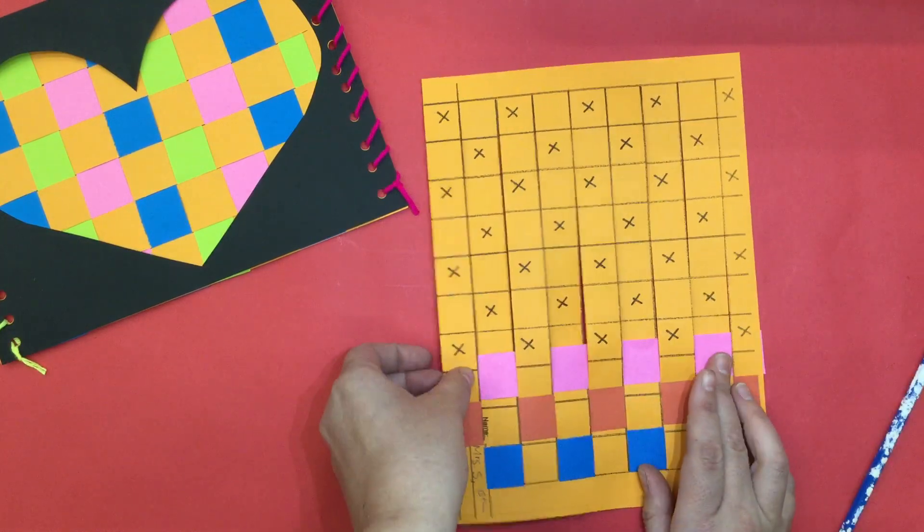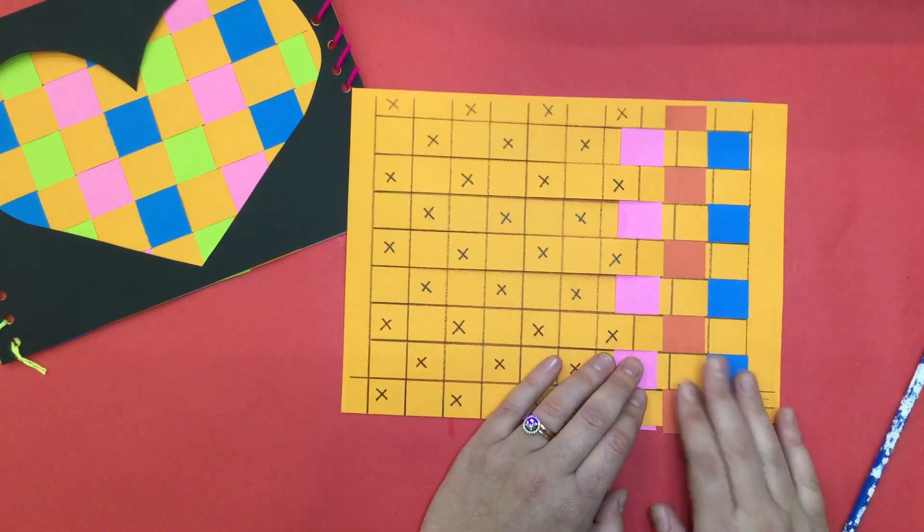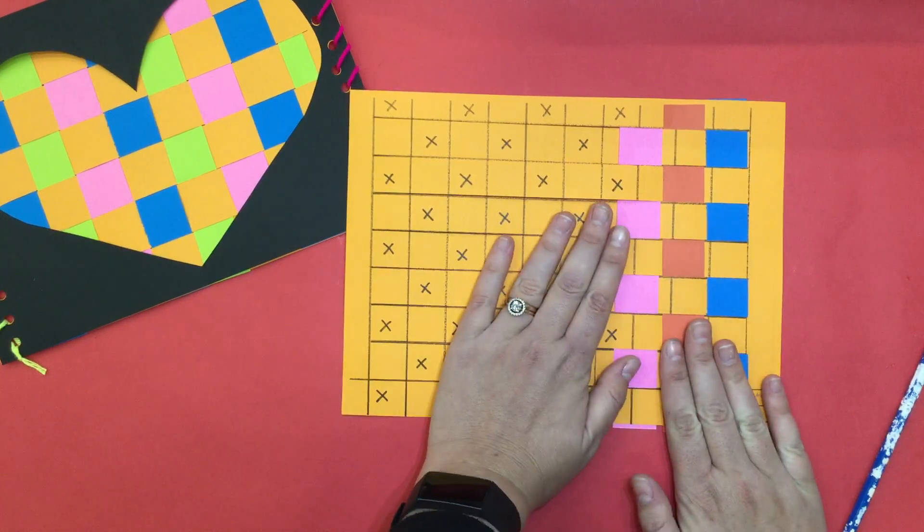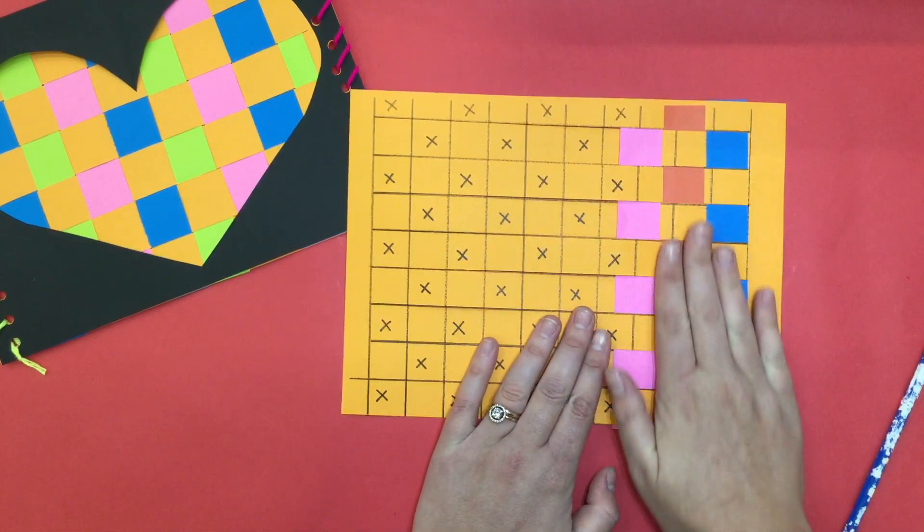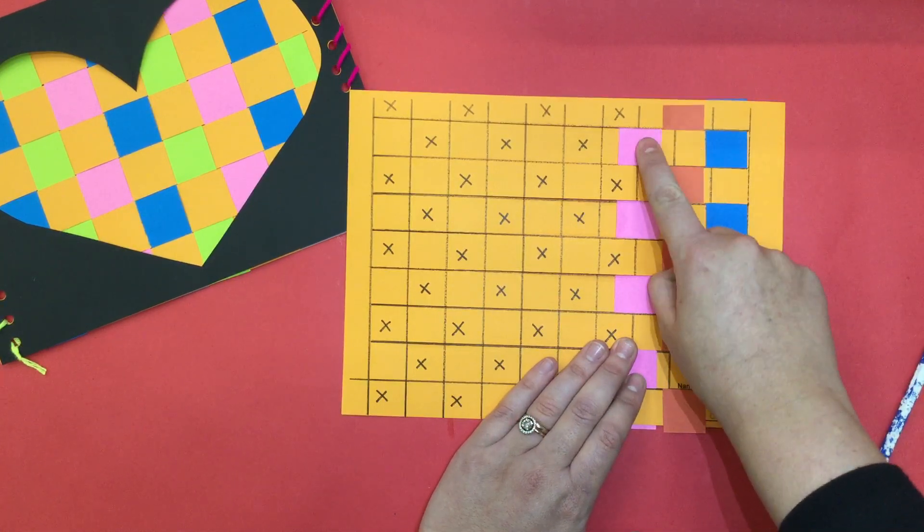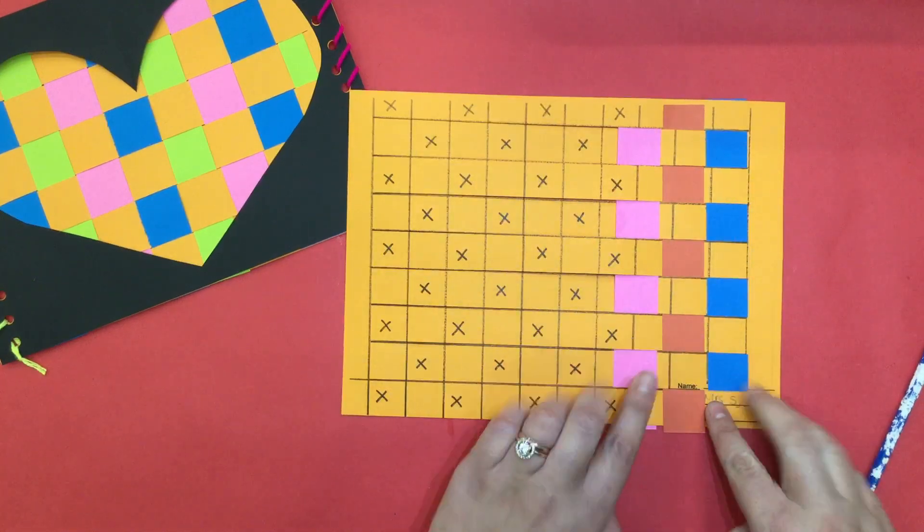Now boys and girls, once you finish all of your papers, double check with your neighbor to make sure that you have done your pattern correctly. So if you have done it correctly you should start to see a checkerboard pattern. So it will have color, no color, color, no color and so on all the way across the board.